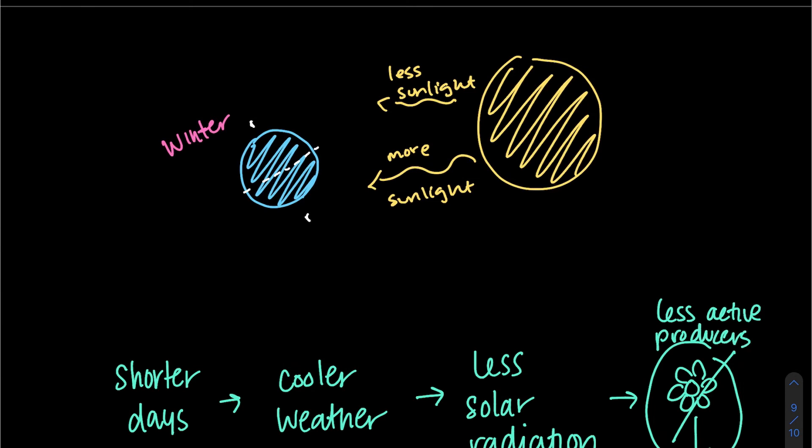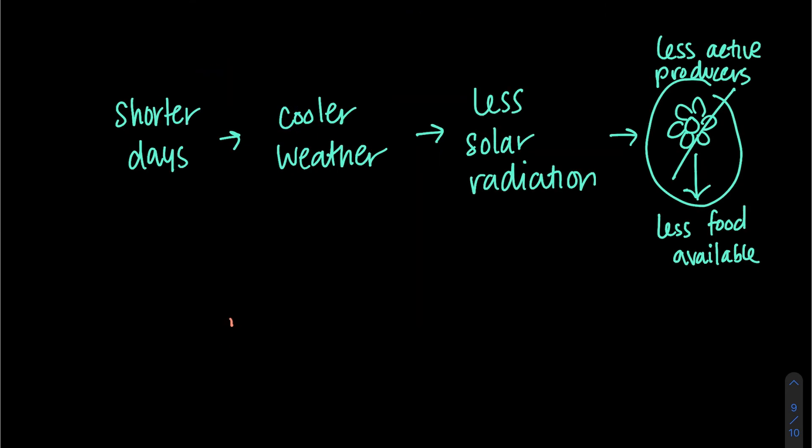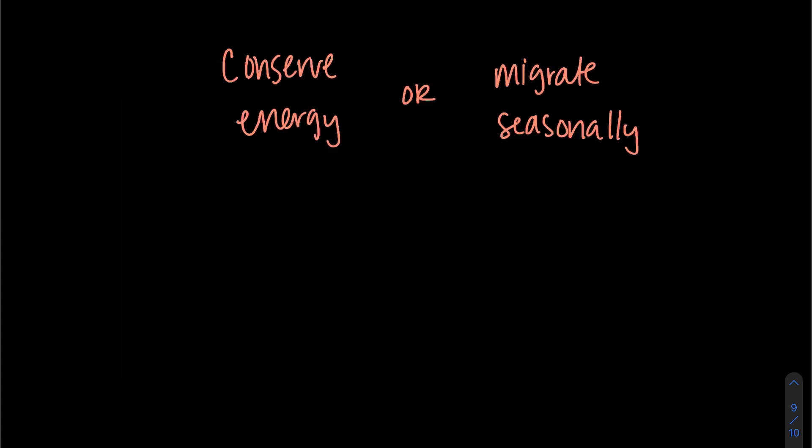And since all organisms rely on producers to make energy available within their ecosystems, and this means that plants aren't producing flowers and fruits, there's less food for some animals. When there's less food available, animals will often hibernate to conserve energy, like mammals eating in preparation for winter and sleeping until spring, or some animals like birds will just migrate south where food is less scarce.